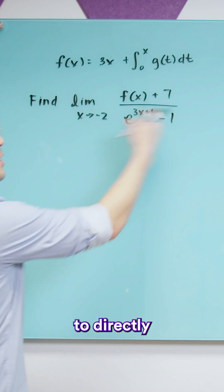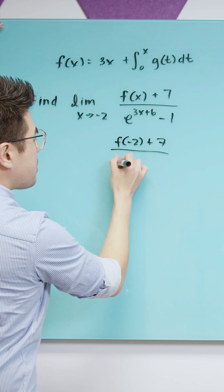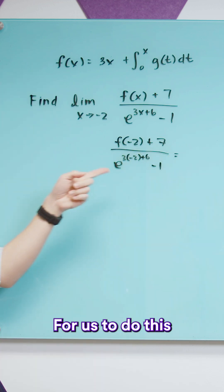So the first thing that we're going to do is directly substitute in the value of negative 2. For us to do this we're going to have to plug in negative 2 into this function to figure out what that value is.